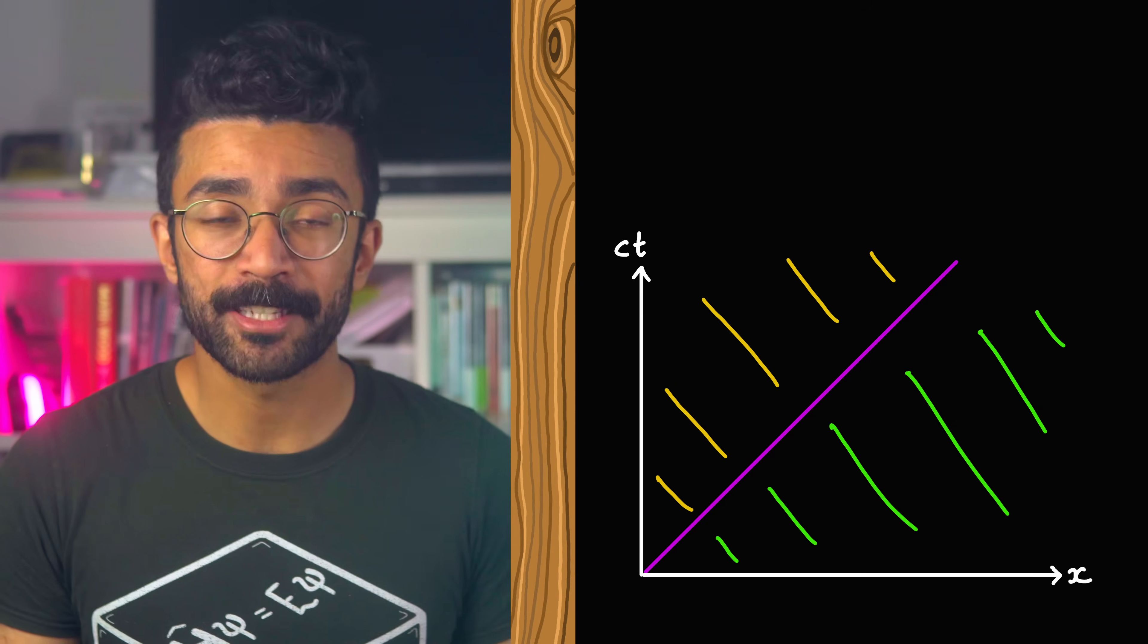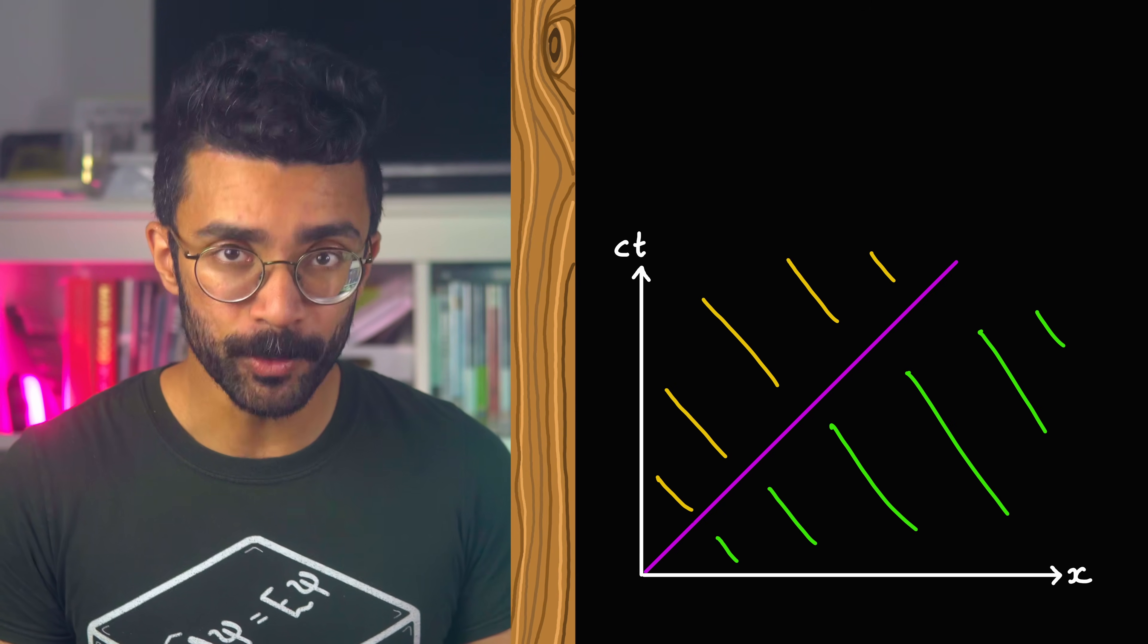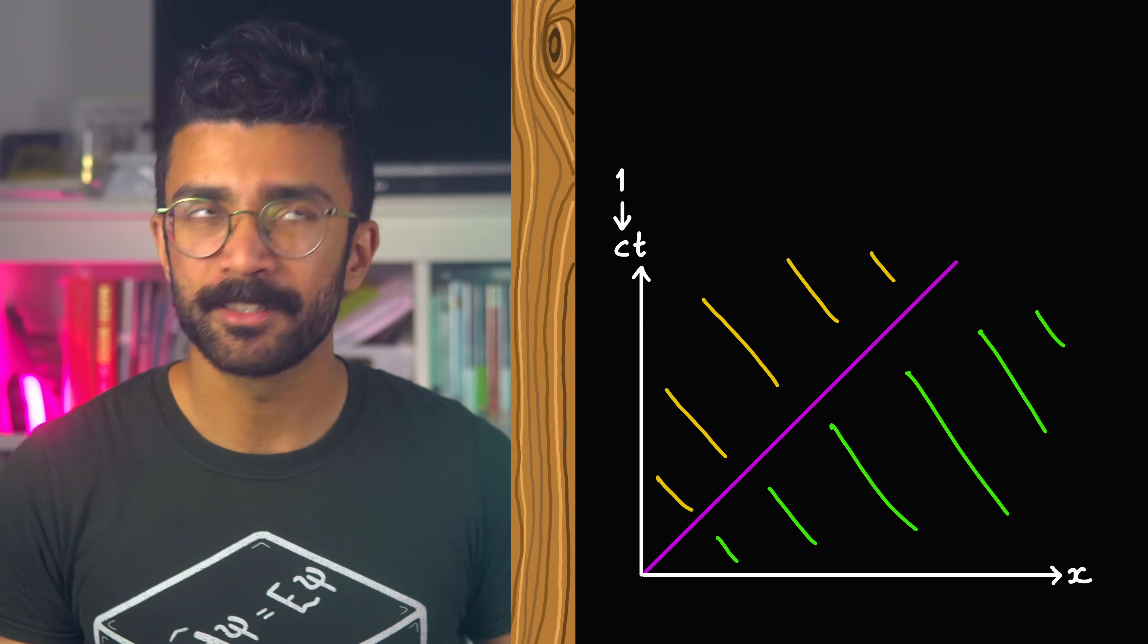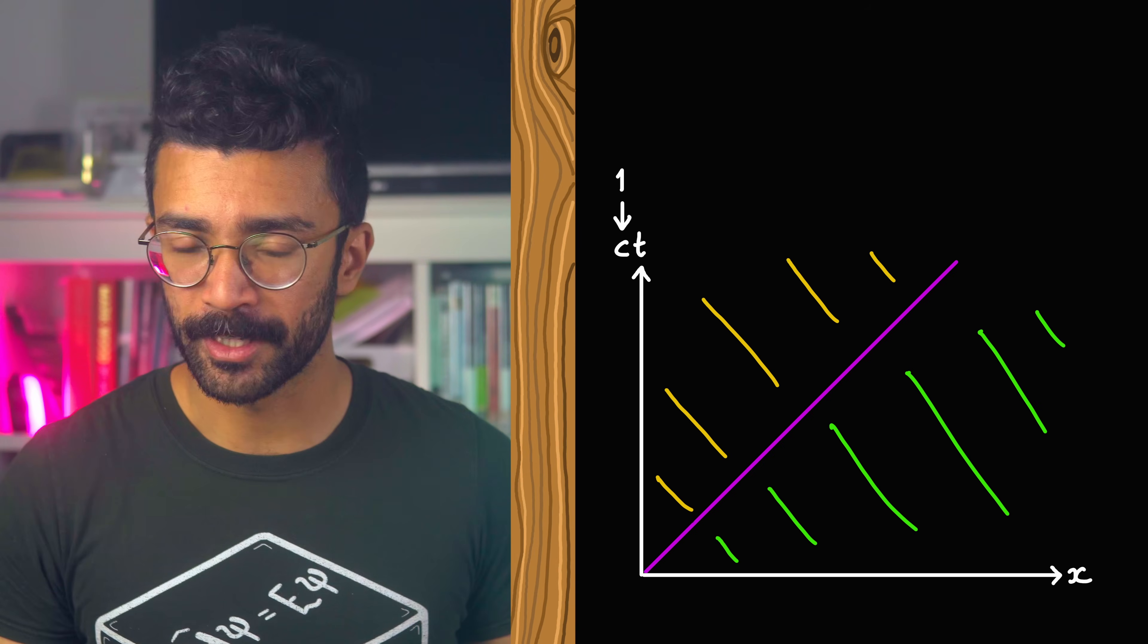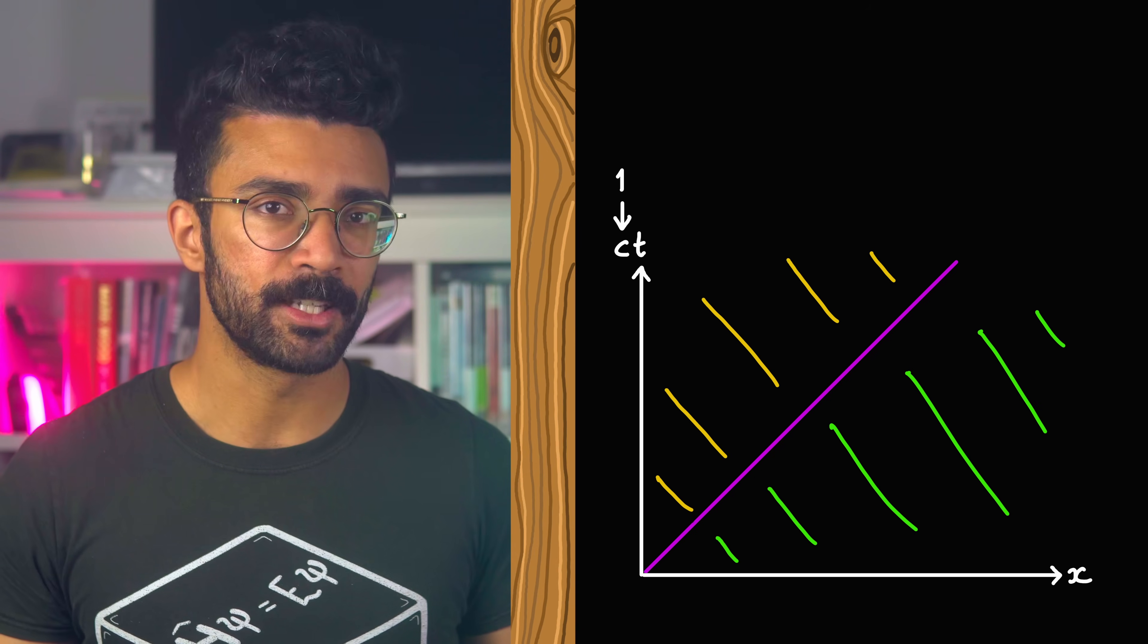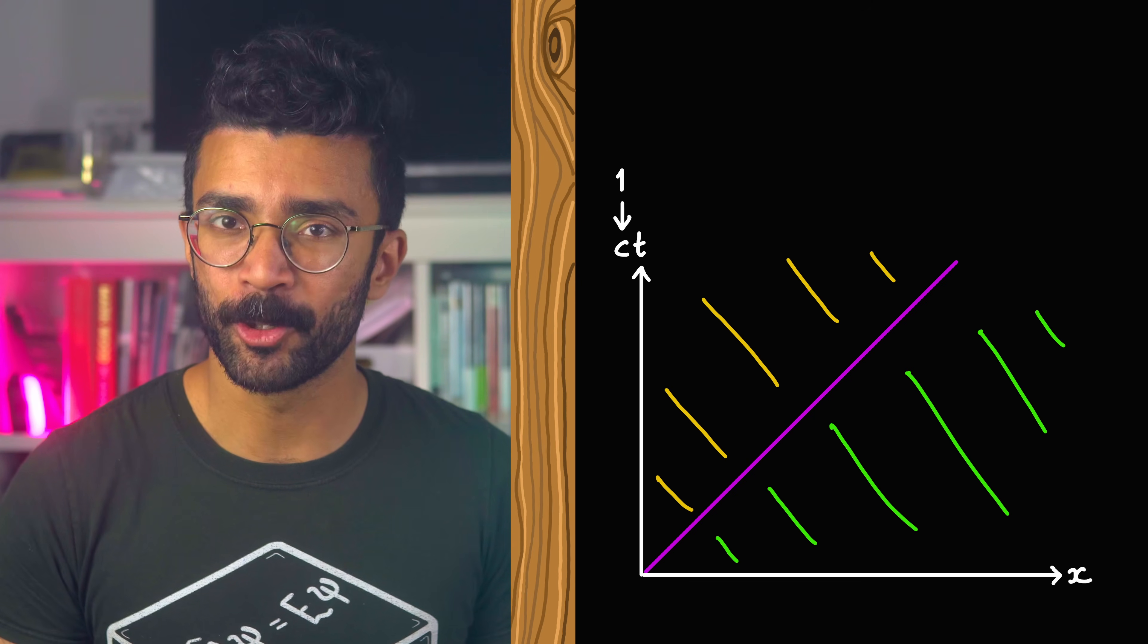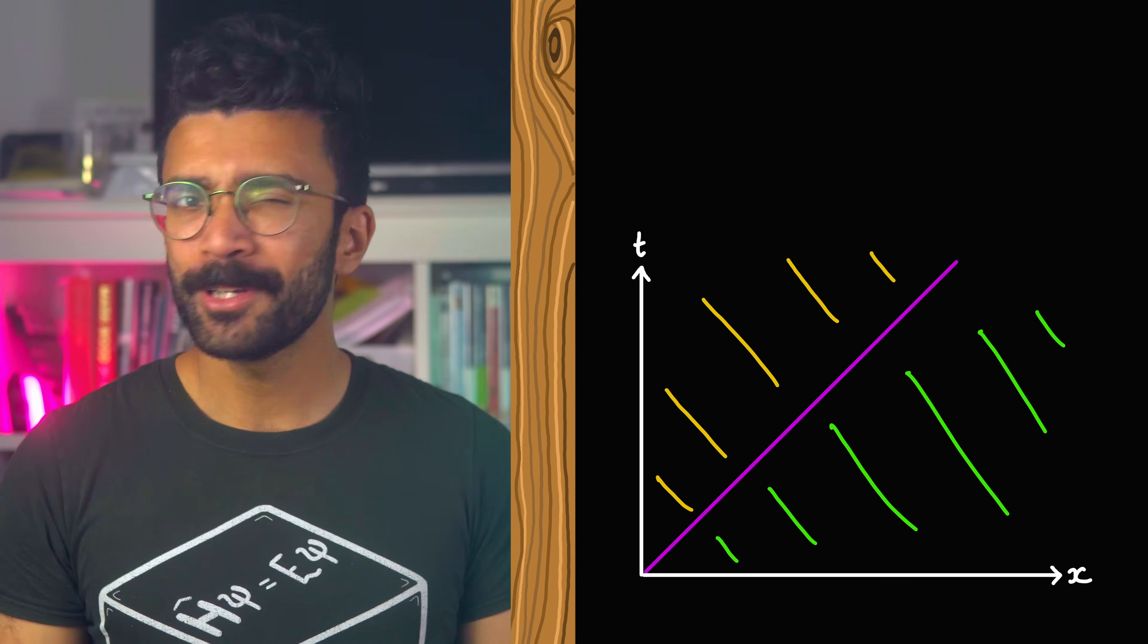As an aside, physicists also like to play another trick where they choose units where the speed of light is just equal to one. In meters per second it's 300 million meters per second, but we could easily choose another unit that gives us one for this value. So the graph simplifies to showing us just what we call x and t.